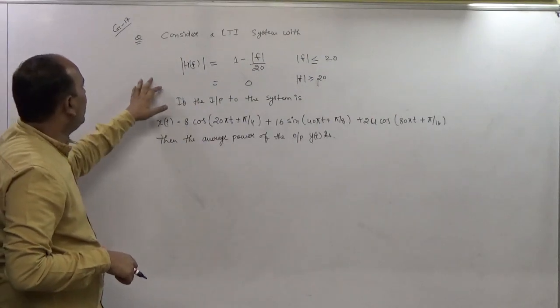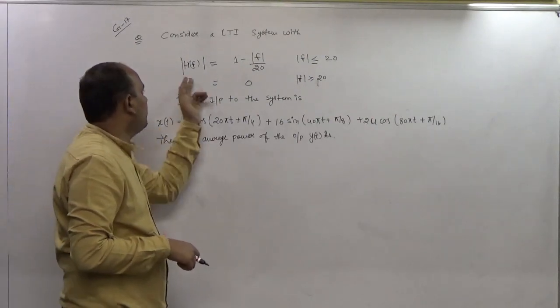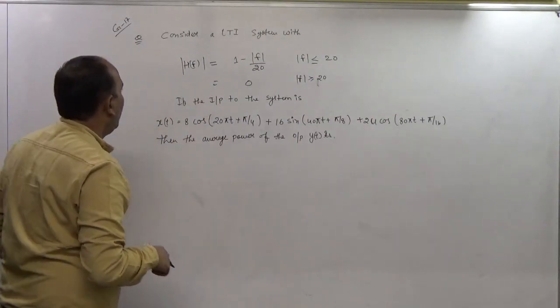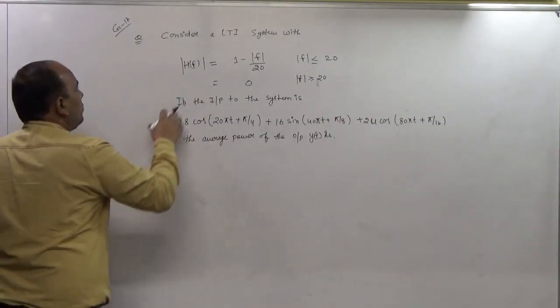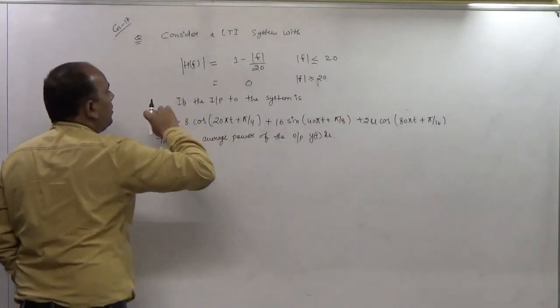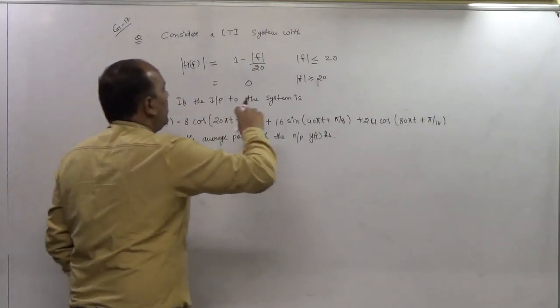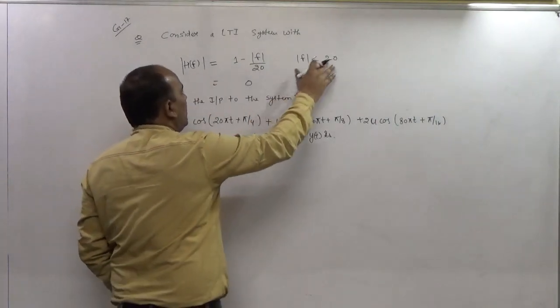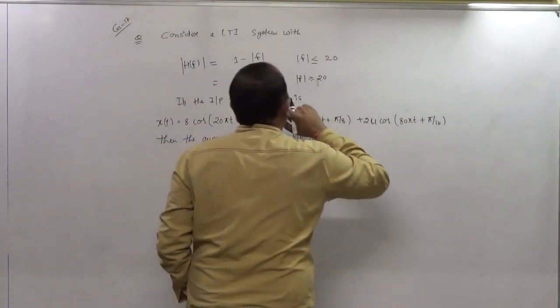The question is: we have an LTI system with H(F) = 1 - |F/20|, where |F| is less than 20.